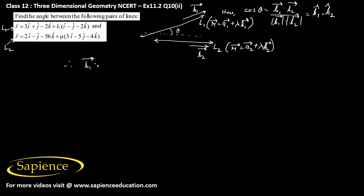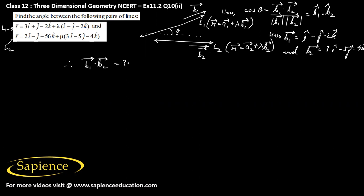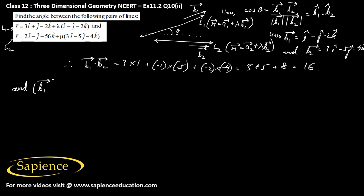First we need to find B1 dot B2. B1 vector is given as i cap minus j cap minus 2k cap, and B2 vector is given as 3i cap minus 5j cap minus 4k cap. Therefore B1 dot B2 equals 3 times 1, plus minus 1 times minus 5, plus minus 2 times minus 4, which gives 3 plus 5 plus 8, that is 16.